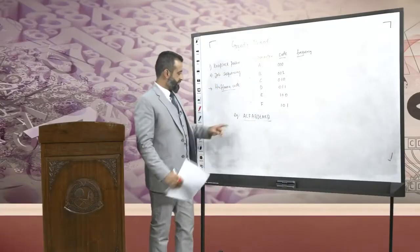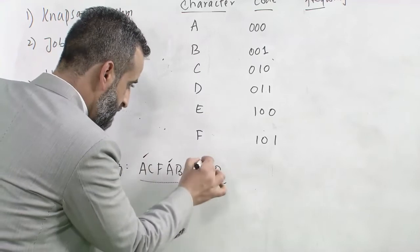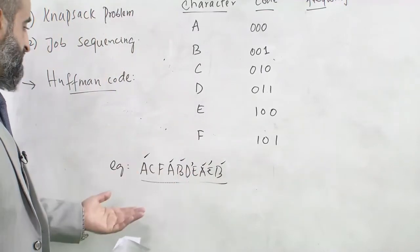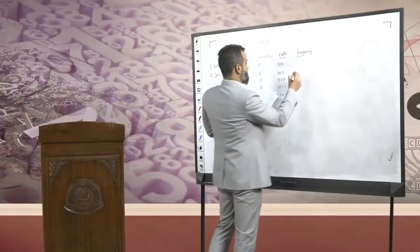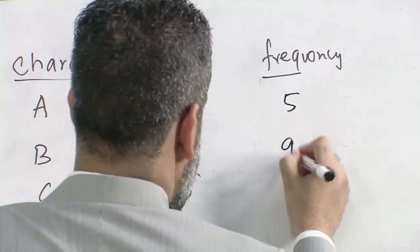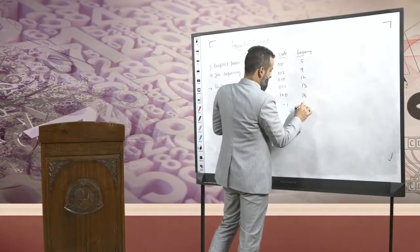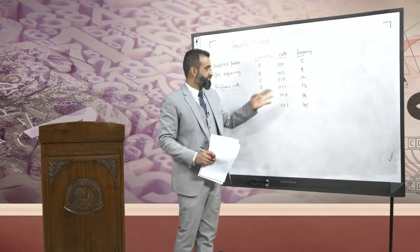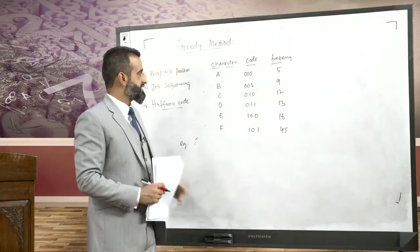For our example, A has a frequency of 5, meaning A appears 5 times in the text. B has a frequency of 9, C has a frequency of 12, D has a frequency of 13, E has a frequency of 16, and F has a frequency of 45. These values simply represent how many times each character figures in the text.